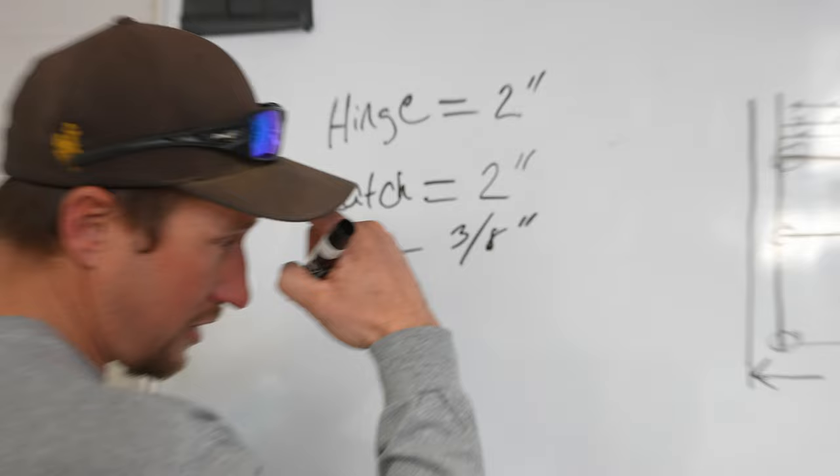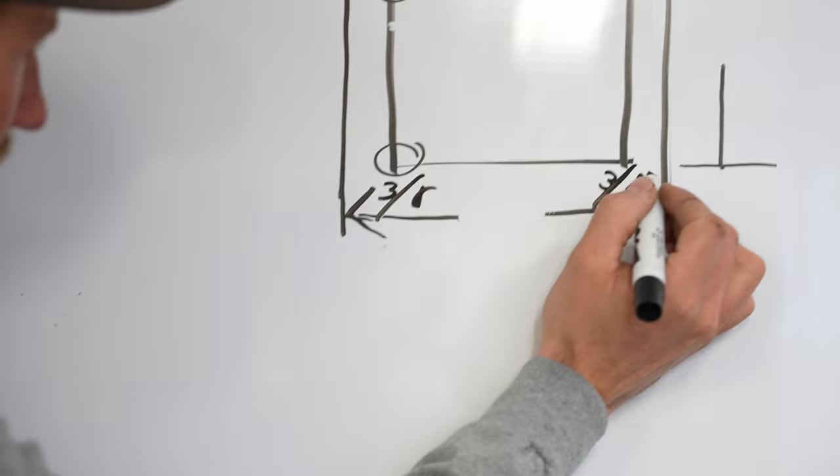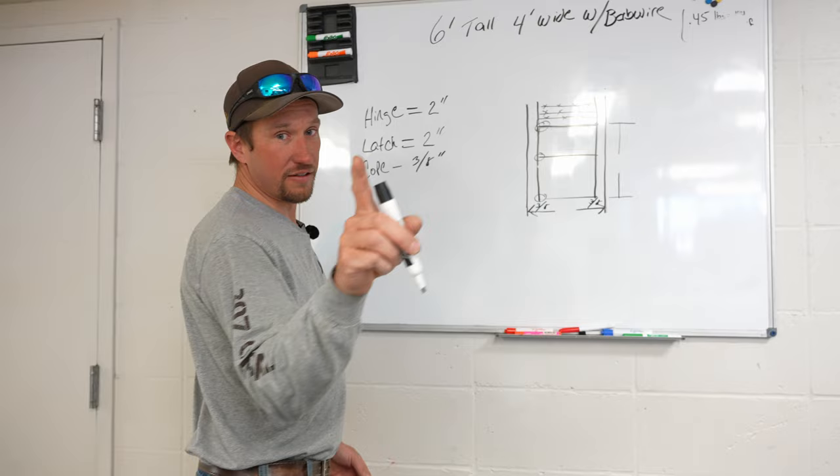So you're going to have a three-eighths of an inch cope here and a three-eighths of an inch cope there, all the way up and down. So the other factor is what size of pipe are we going to use? Well, we're going to use inch and seven-eighths pipe.